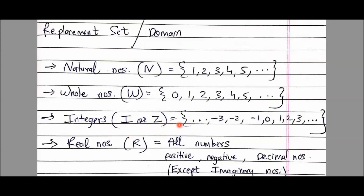Integers include all numbers — positive, negative, and zero — but decimal numbers are never included. So: ...−3, −2, −1, 0, 1, 2, 3... towards both extremes. All positive, all negative integers and zero are included, but no decimals.